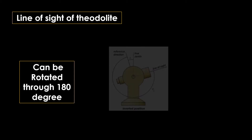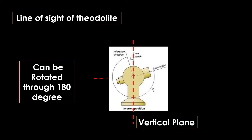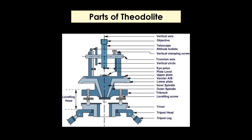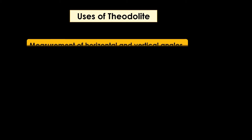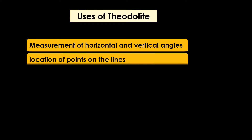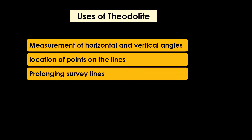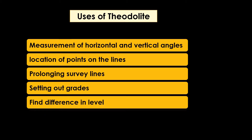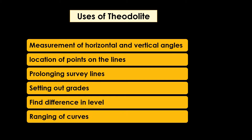The line of sight of a theodolite can be rotated through 180 degrees in its horizontal axis and vertical plane. A theodolite is used to measure horizontal and vertical angles. They are used for location of points on lines, for prolonging survey lines, for setting out grids, for finding the level difference between two points, and for ranging of curves.